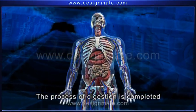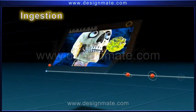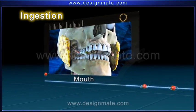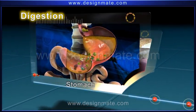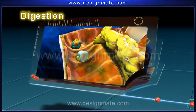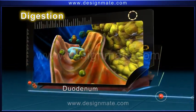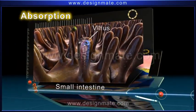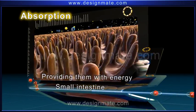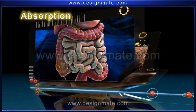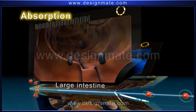Thus, the process of digestion is completed. To summarize: the complex food that is ingested is acted upon by enzymes in the stomach and broken into simpler food particles. Then, in the duodenum, the enzymes act on these particles and further break them into simpler particles, which can be absorbed by the villi in the small intestine. This food is transported to the various parts of the body providing them with energy. The undigested food and water molecules move into the large intestine, where the water molecules are absorbed by the intestinal walls, and the undigested food is collected in the rectum and finally excreted.